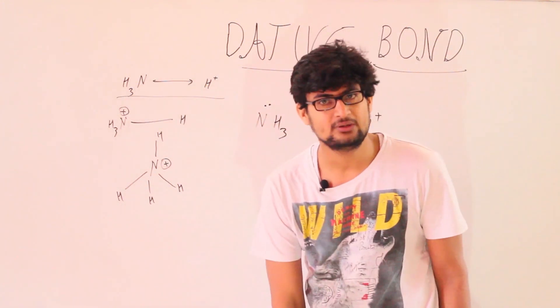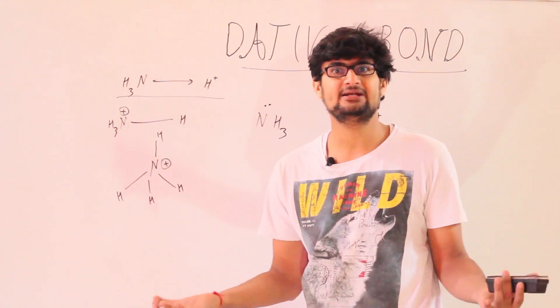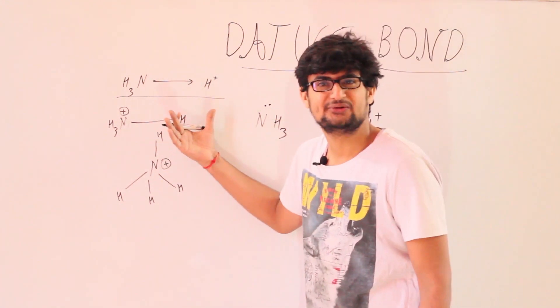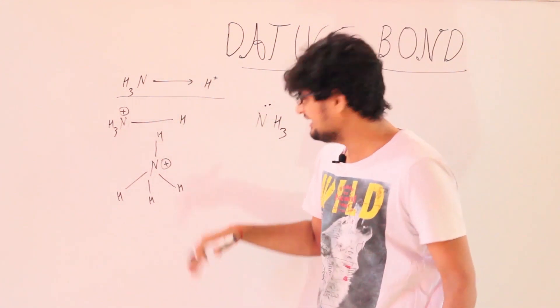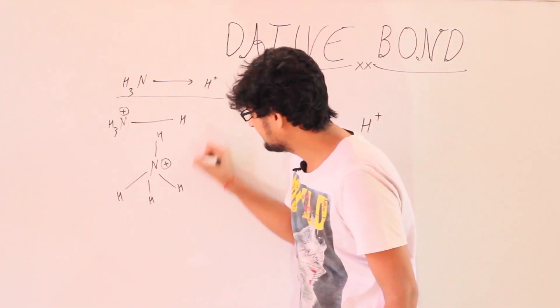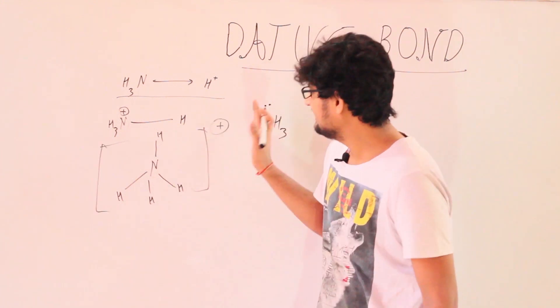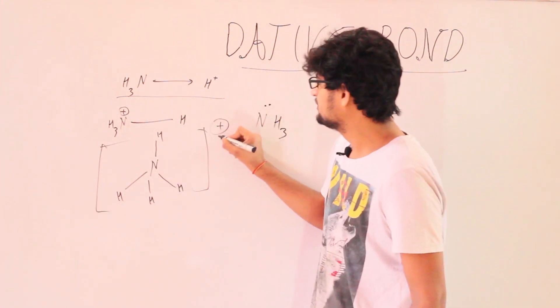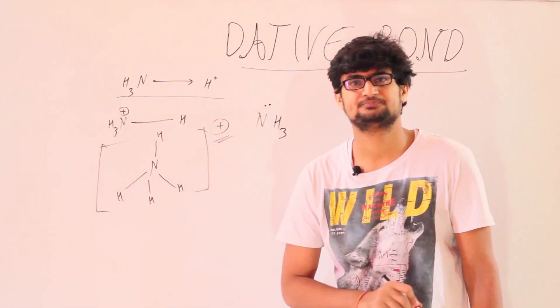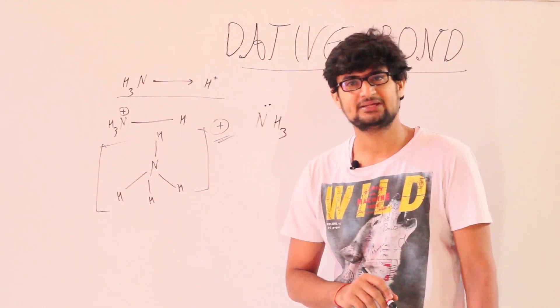So this representation looks slightly incorrect while this representation looks perfectly correct. We can either show the ion like this, or we can put brackets and show a charge like this. Okay, thank you.